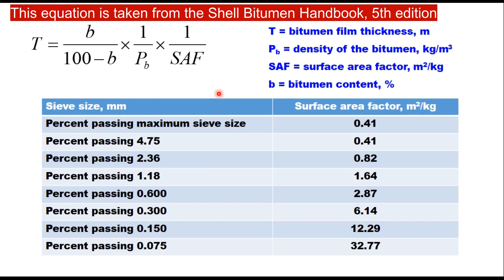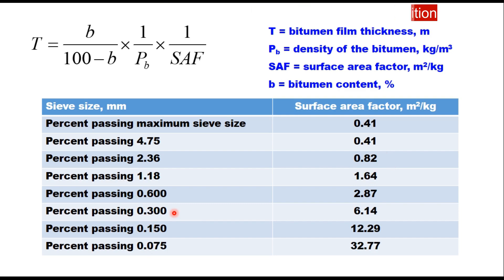These are the surface area factors suggested by Hveem in his mix design procedure. For percent passing the maximum sieve size, the factor is 0.41; for percent passing 4.75 mm it is 0.41; passing 2.36 mm it is 0.82. As the sieve size reduces — that is, as grain size reduces — the surface area factor increases.